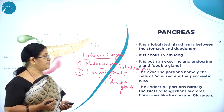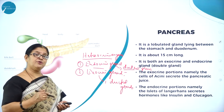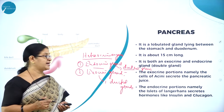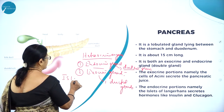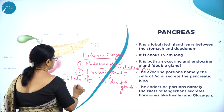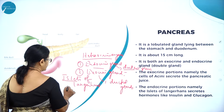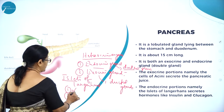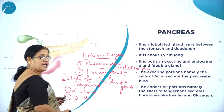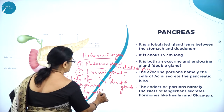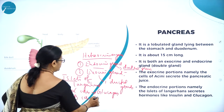The exocrine part of the pancreas — called acini cells — produces pancreatic juice, and the endocrine part of the pancreas — called islets of Langerhans — produces two types of cells: alpha cells and beta cells. Alpha cells produce a hormone called glucagon and beta cells produce a hormone called insulin.